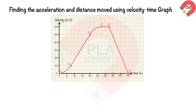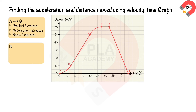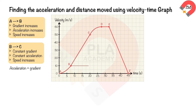Finding acceleration and distance from a velocity-time graph: between A and B, the gradient is increasing so acceleration is also increasing and speed increases. Between B and C, the gradient is positive and constant, so acceleration is constant and speed increases. The constant acceleration is found from the gradient: change in x = 20 − 7.5 = 12.5, change in y = 50 − 10 = 40. Therefore, acceleration = 40 / 12.5 = 3.2 m/s².